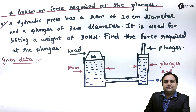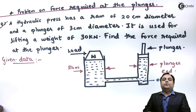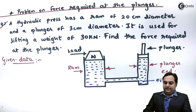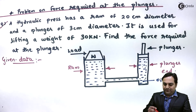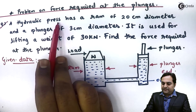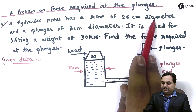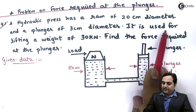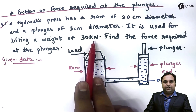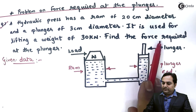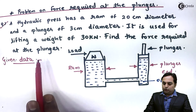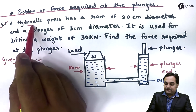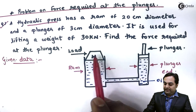Hello friends, in this video we will see the problem based on force required at the plunger. A hydraulic press has a RAM of 20 centimeter diameter and a plunger of 3 centimeter diameter. It is used for lifting a weight of 30 kilo Newton. Find the force required at the plunger.